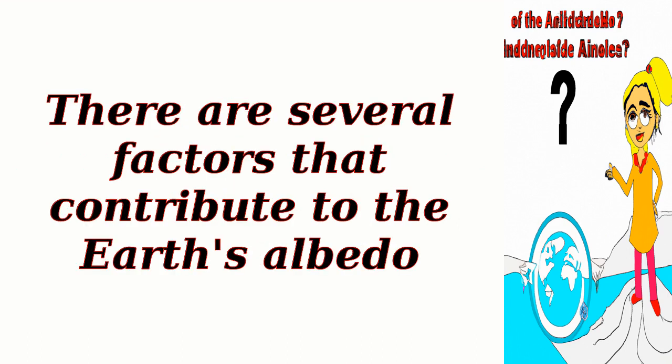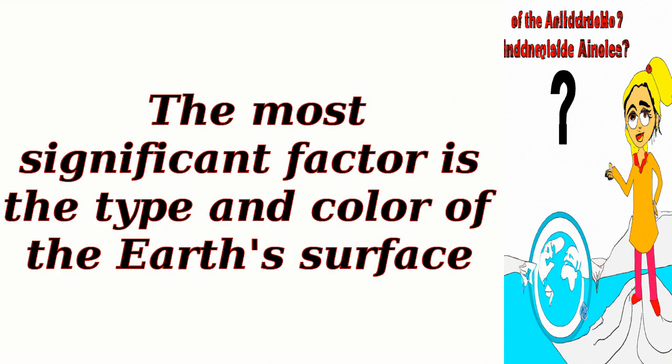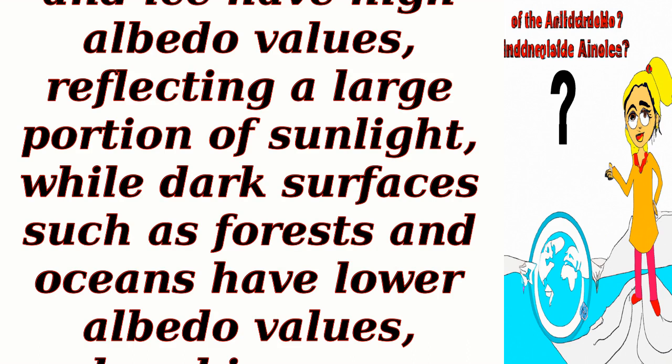There are several factors that contribute to the Earth's albedo. The most significant factor is the type and color of the Earth's surface. For example, snow and ice have high albedo values, reflecting a large portion of sunlight, while dark surfaces such as forests and oceans have lower albedo values, absorbing more sunlight.